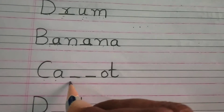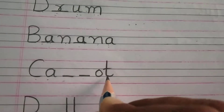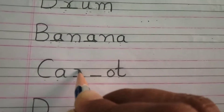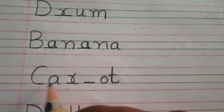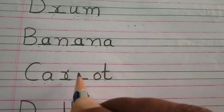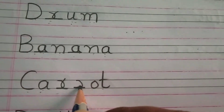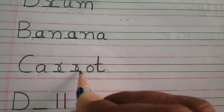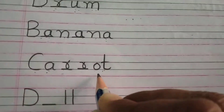See here — C A dash dash O T — what will come here? A R — C A R, another R — C A R R O T — carrot.